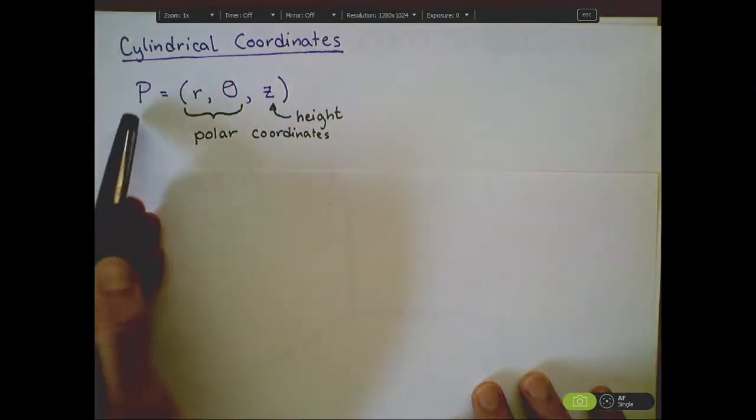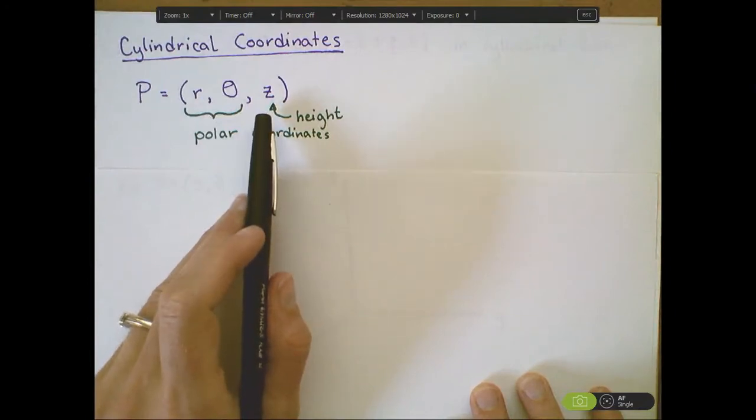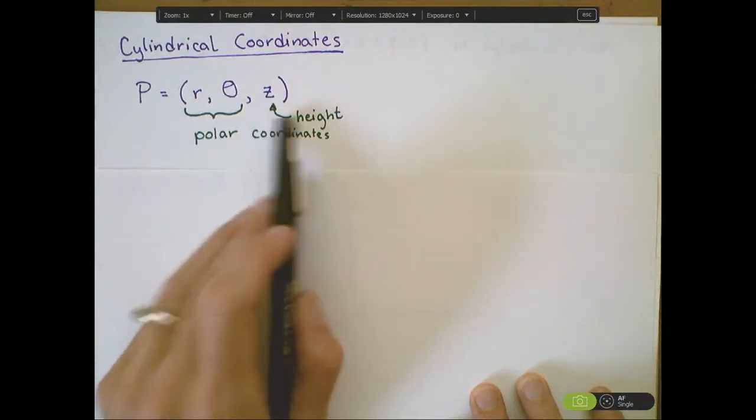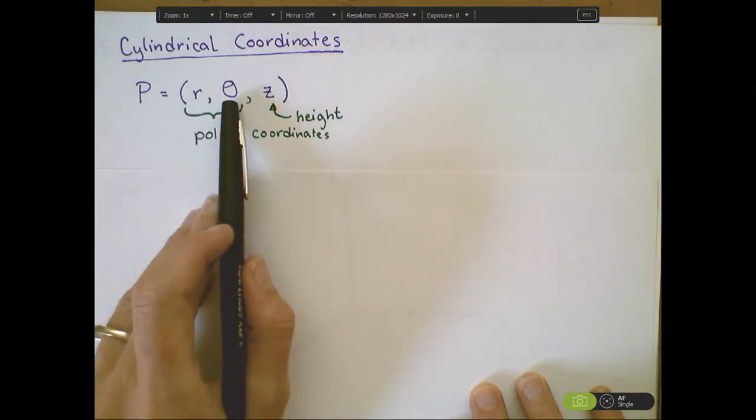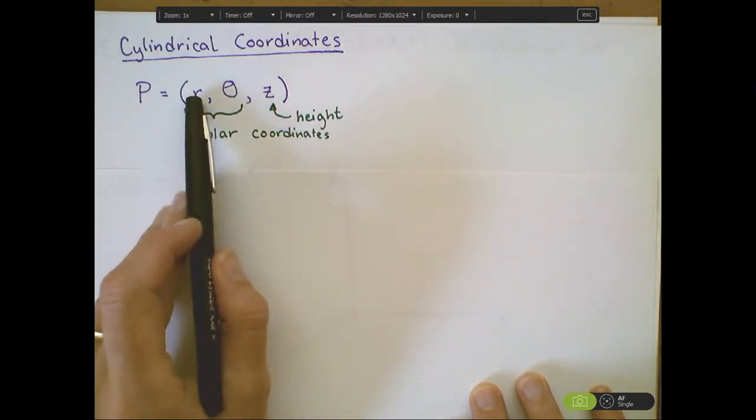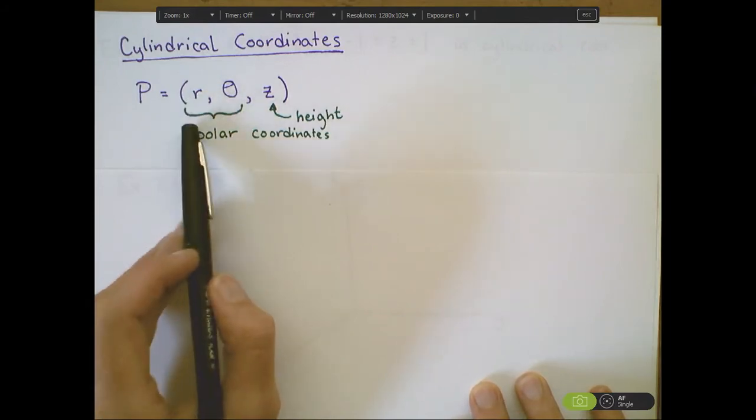Notice that the points are going to be very similar to polar coordinates. We're just going to add a Z component that's exactly equal to the height. In this case, the R and the theta are exactly what they were before. That R measures the distance from the projection of the point into the xy-plane from the origin.